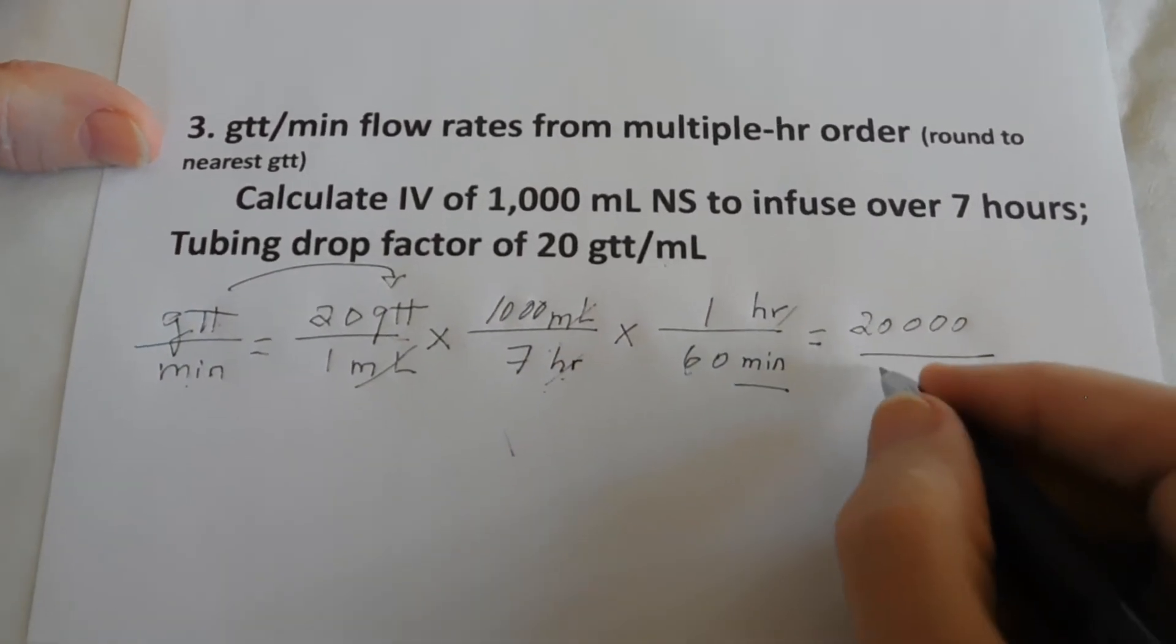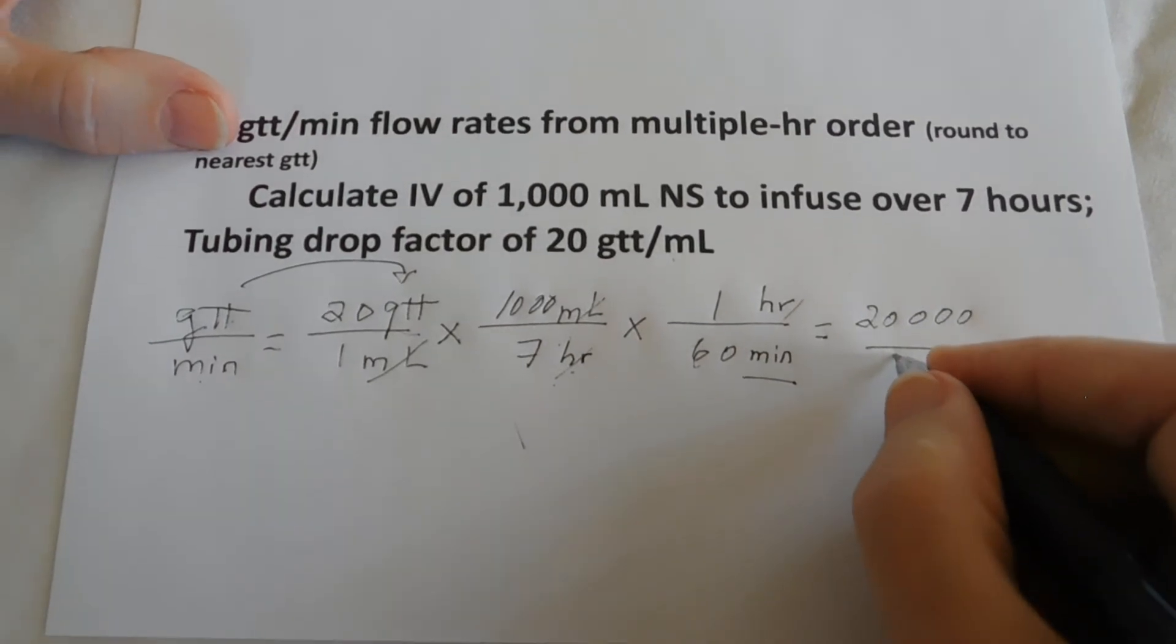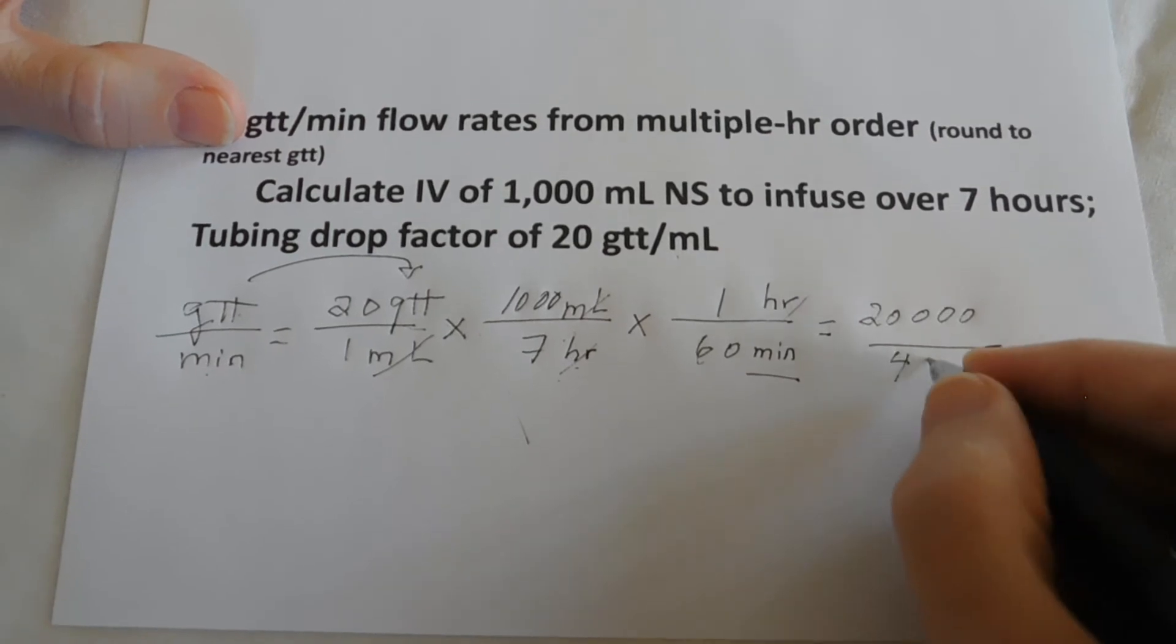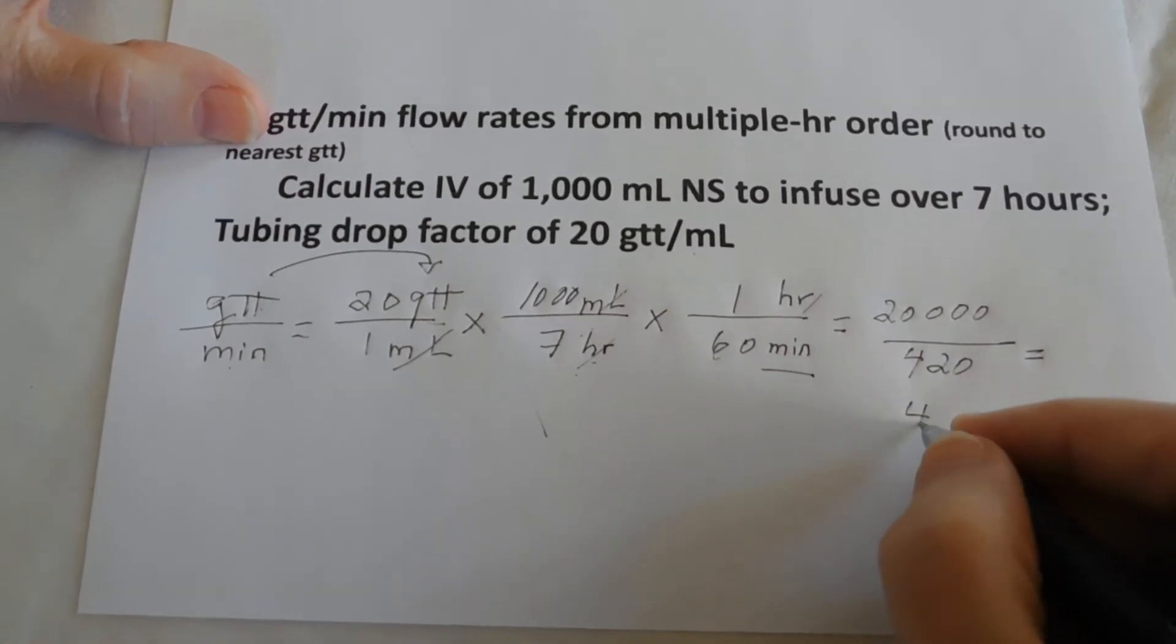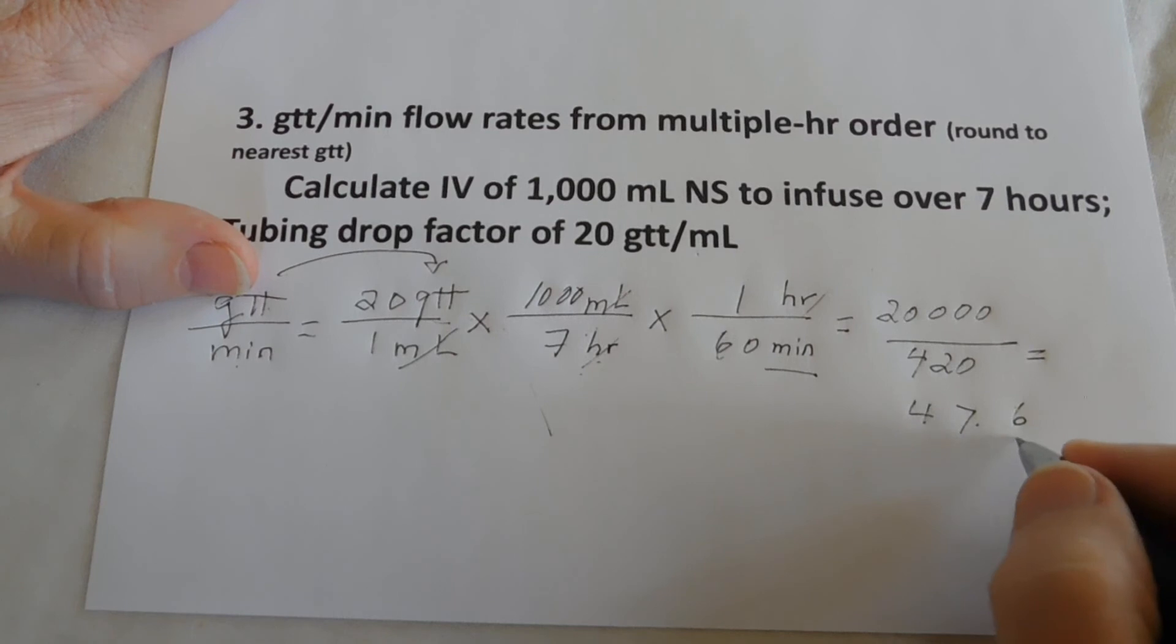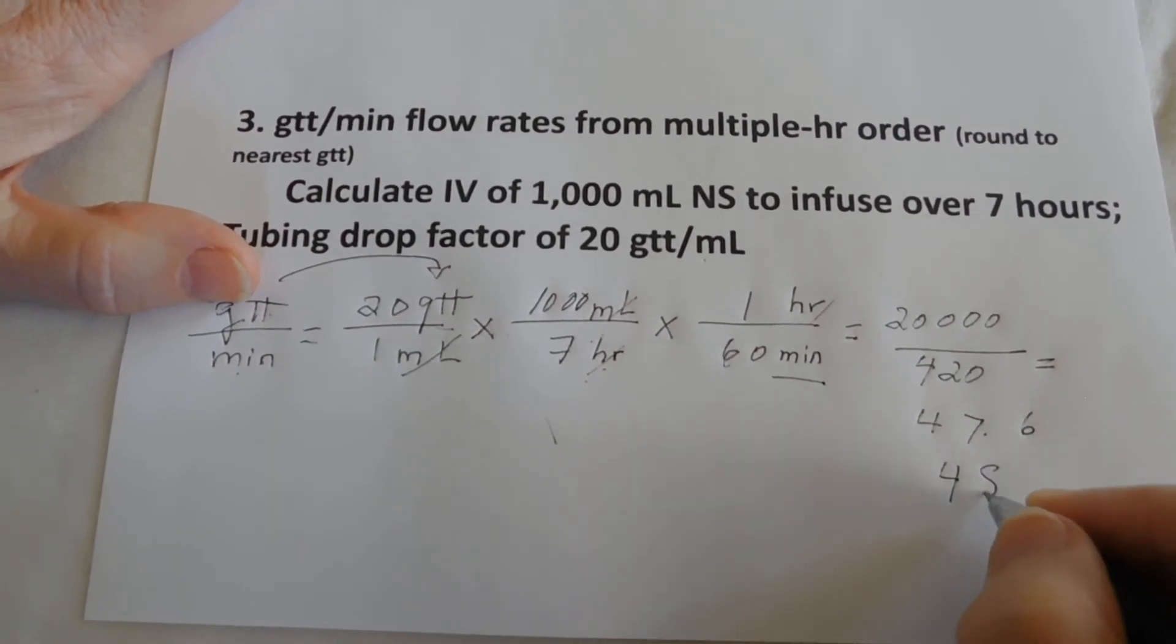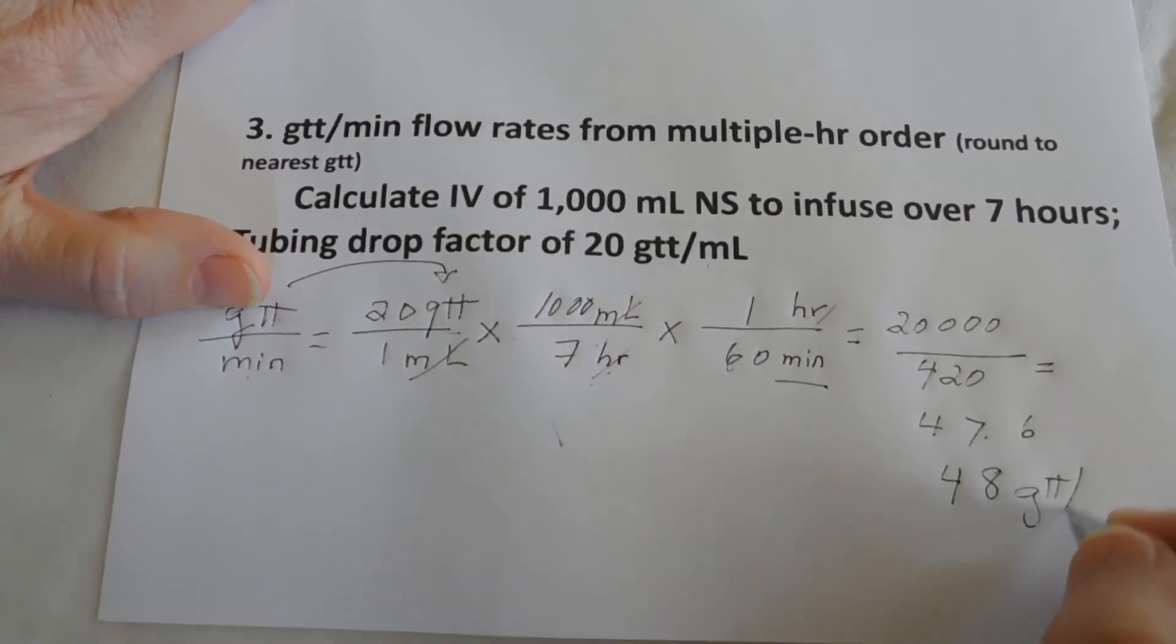And the denominators multiplied together is 60 times 7, which would be 420. And that comes out to 47.6. And we will round to the nearest drop, which would be 48, 48 what, 48 drops per minute.